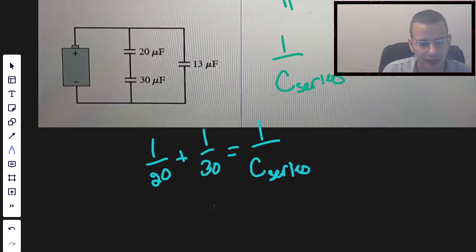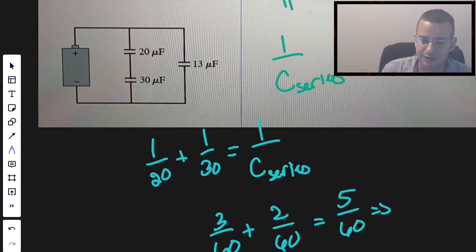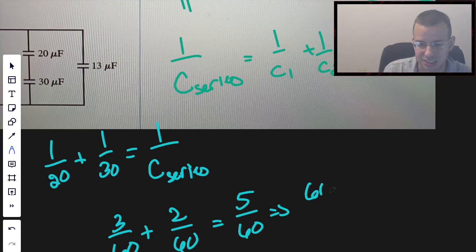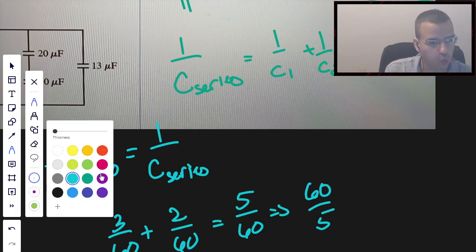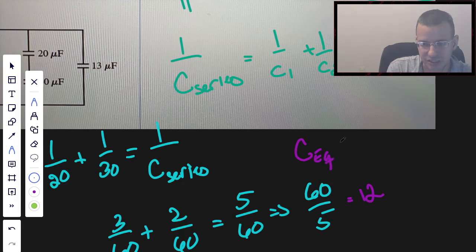We're going to do a common denominator. So we multiply this one by 3. So 3 over 60 plus 2 over 60 equals 5 over 60. Take the inverse of 5 over 60, we get 60 over 5, which is 12, because 12 times 5 is 60. So the equivalent capacitance is 12, and the units are microfarads.